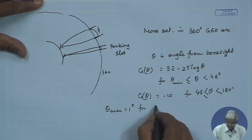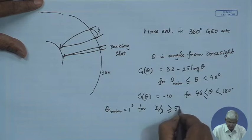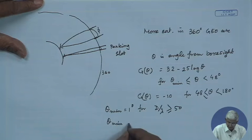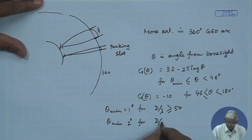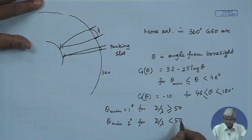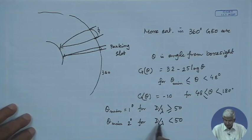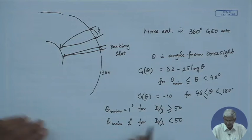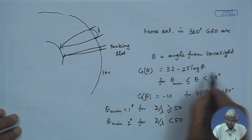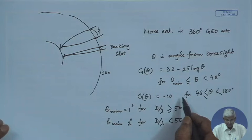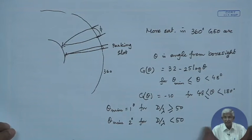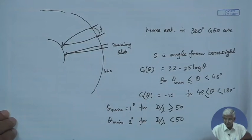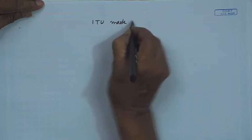The θ_minimum can be 1 degree for D/λ greater than 50, and θ_minimum is 2 degrees for D/λ less than 50. When D/λ is less than 50, the diameter is smaller and the beam is larger, so θ_minimum is 2 degrees — you can understand why it is much larger. This is a mask given internationally, and all ground operators working on satellite communication try to follow this mask; otherwise it will start interfering with others.